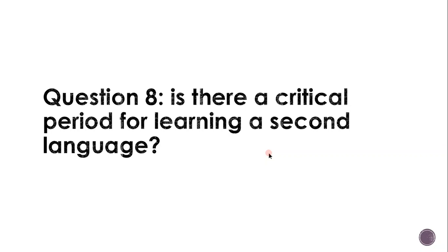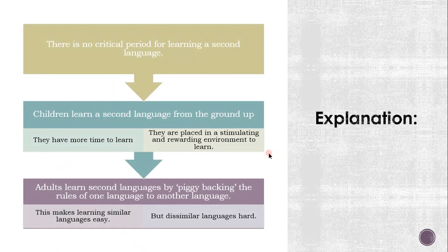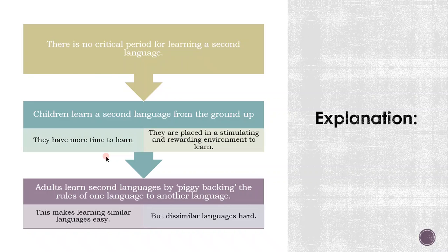Question eight. Is there a critical period for learning a second language? No — well, it's not a clear yes or no at the moment, but there is no proven critical period for learning a second language. Children learn a second language from the ground up, likely because they have more time to learn and are placed in a stimulating and rewarding environment. Adults learn second languages by piggybacking the rules of one language onto another, which makes learning similar languages easy but dissimilar languages quite difficult.